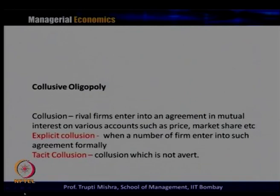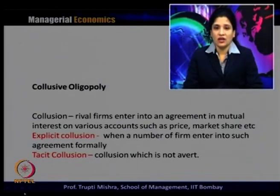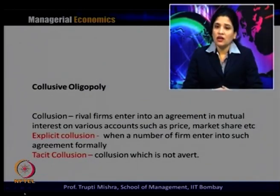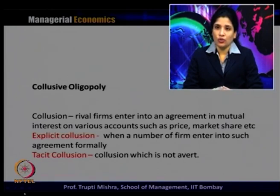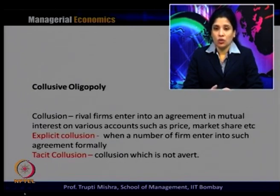Before getting into the model, let us understand what collusion means. Collusion is when rival firms or all firms enter into an agreement in mutual interest on various accounts such as price and market share. Simply put, collusion is an agreement where all the firms come together and jointly decide the price to be followed in the market and what the market share should be. Two kinds of collusion may occur: explicit collusion and tacit collusion.